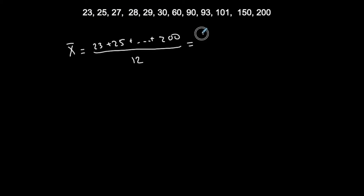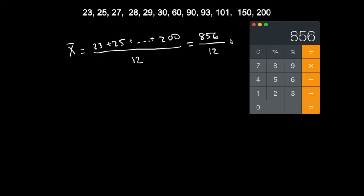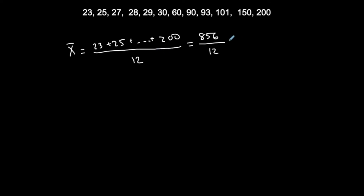So the sum of all the values is 856, divided by 12. That gives 71.3333..., which I'll round to 71.3. My rounding rule for the mean is one more digit than represented in the data set — since the data is in ones place, I round to the tenths place. So the mean is approximately 71.3.